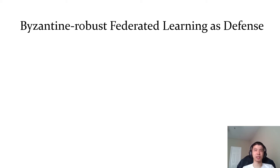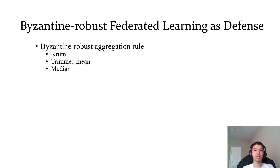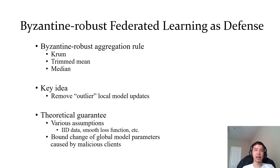These methods use Byzantine-robust aggregation rules instead of the conventional average aggregation rule. Roughly speaking, the key idea of a Byzantine-robust aggregation rule is to remove outlier local model updates before aggregating them to update the global model. Under some assumptions, such as that the clients' local data are i.i.d. and the loss function is smooth, these methods can bound the change of the global model parameters caused by malicious clients.